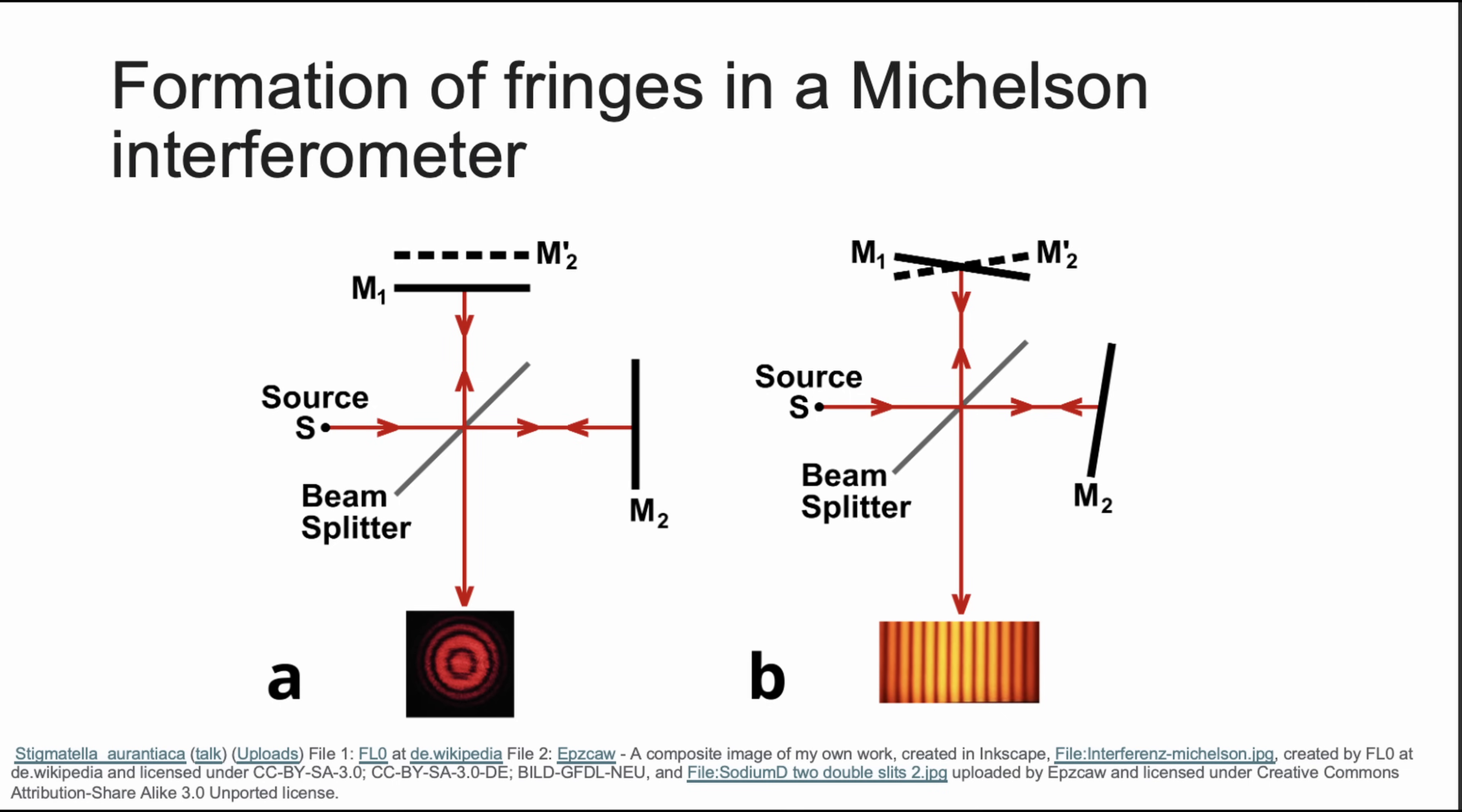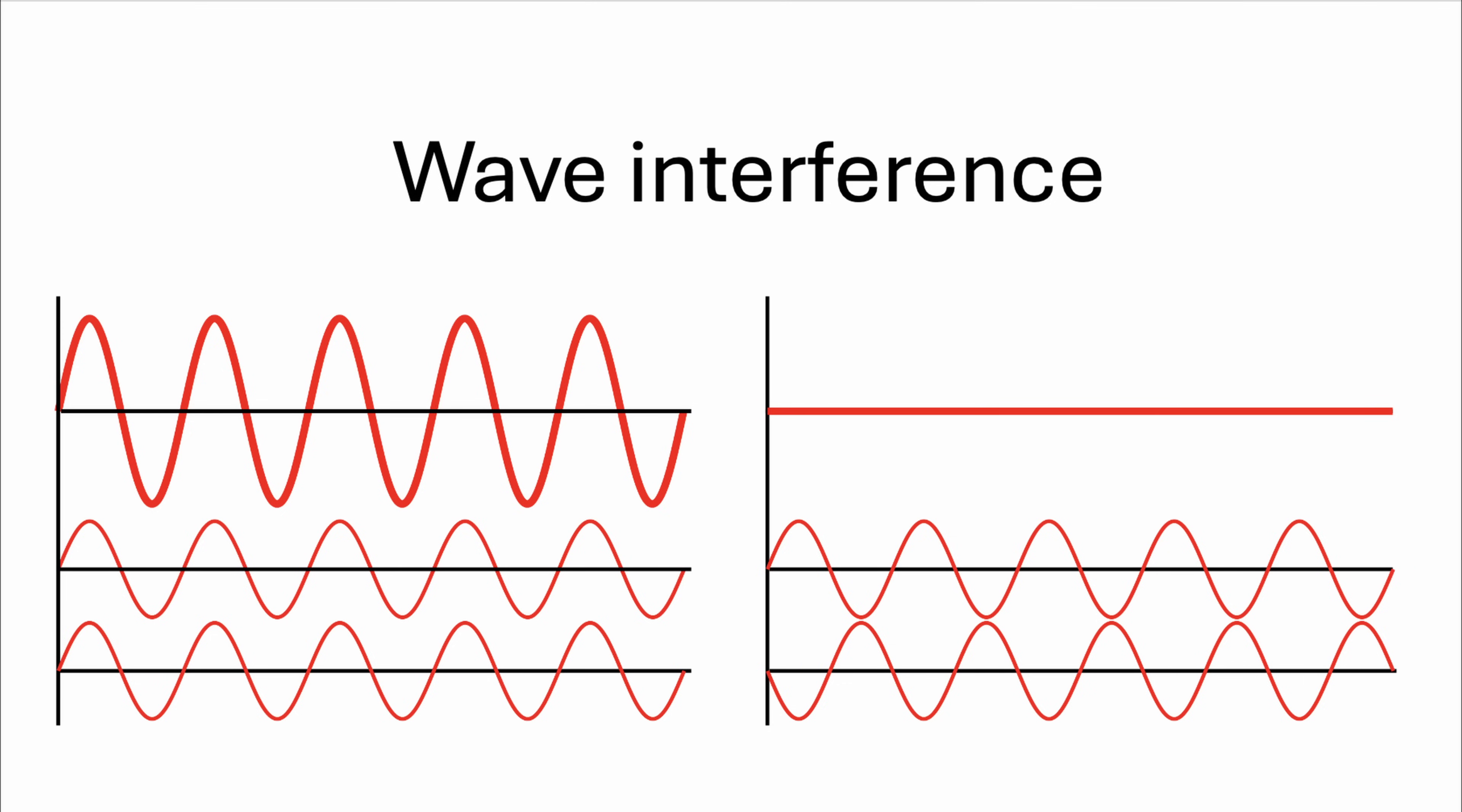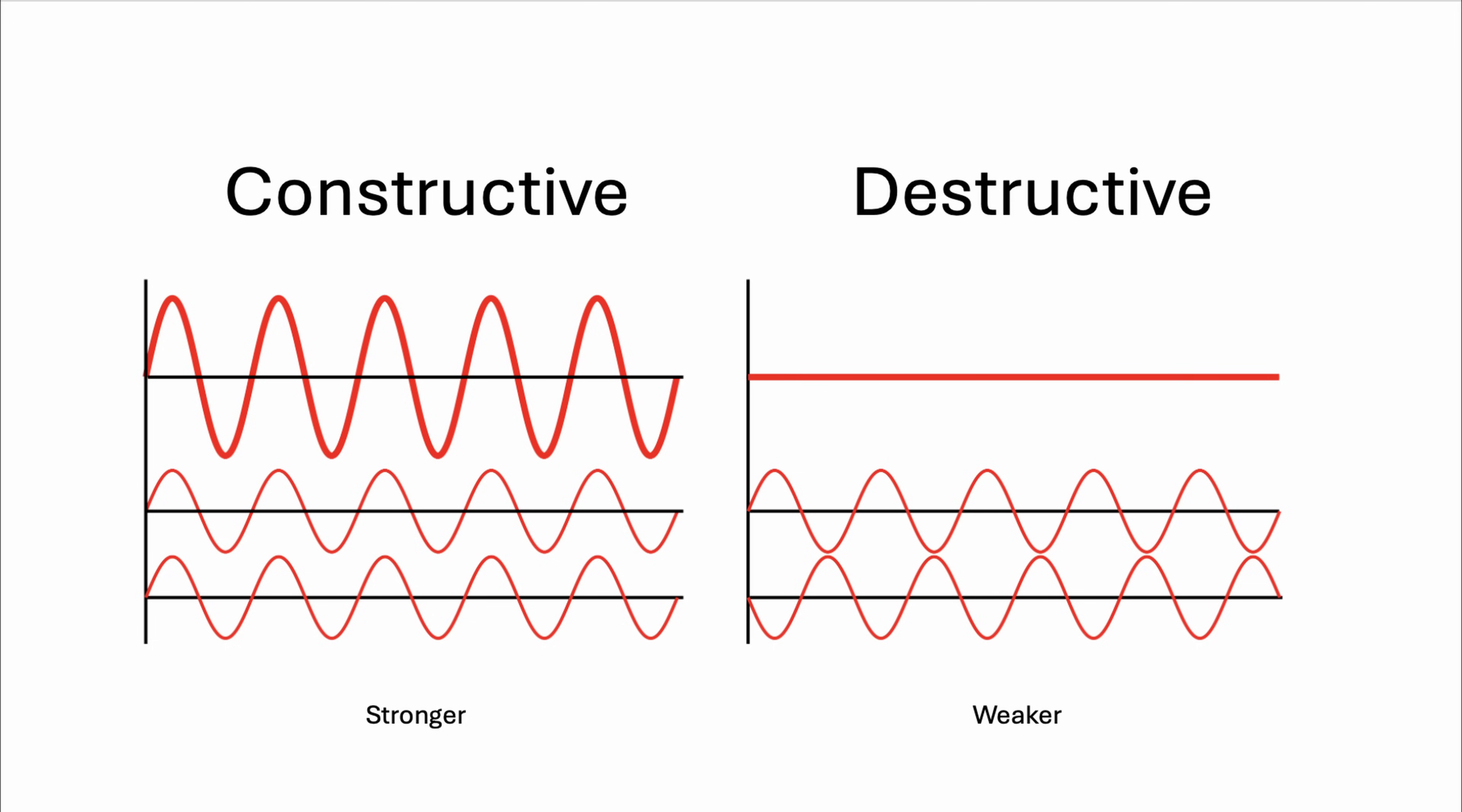Since one mirror is moving and the other is stationary, the two IR beams travel slightly different distances before being reflected back and recombining at the beam splitter. This creates a difference in the path length traveled by each beam. As the mirror moves back and forth, this path difference continuously changes. When the two beams recombine at the beam splitter, they interfere with each other, producing a pattern of constructive and destructive interference.